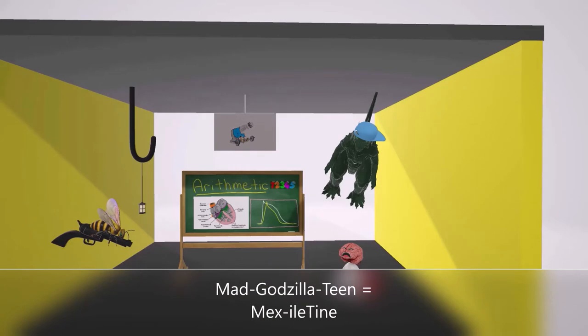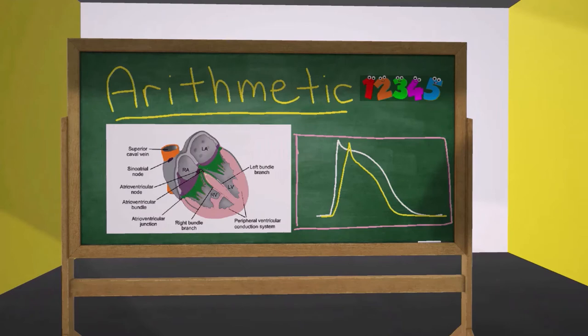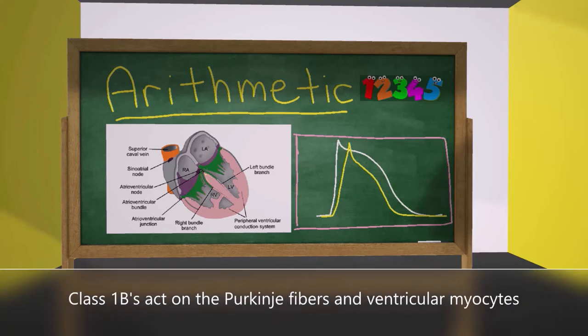Now that we've spoken about the different types of Class 1B anti-arrhythmic drugs, let's talk about the mechanism of action. In the arithmetic class, the teacher got sidetracked and started talking about the heart. He shaded the ventricles as well as the Purkinje fibers in pink because that was the class discussion today - Purkinje fibers and the ventricles. This helps us remember that Class 1B anti-arrhythmic drugs work on the Purkinje fibers and the ventricular